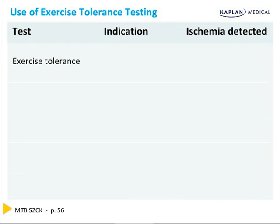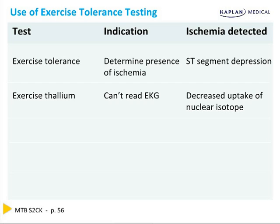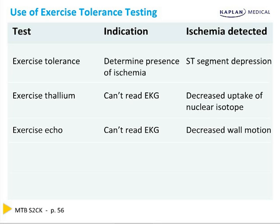To summarize indications for stress tests: the standard exercise tolerance stress test looks for the presence of ischemia by putting the patient on a treadmill, running them up to target heart rate, and looking for ST depression. Exercise thallium is indicated when you can't read the EKG — because of pre-existing ST segment depression, a pacemaker, bundle branch block, digoxin use, or left ventricular hypertrophy causing baseline ST changes. Exercise thallium and exercise echo are identical in sensitivity and specificity — you cannot be asked to choose between them.